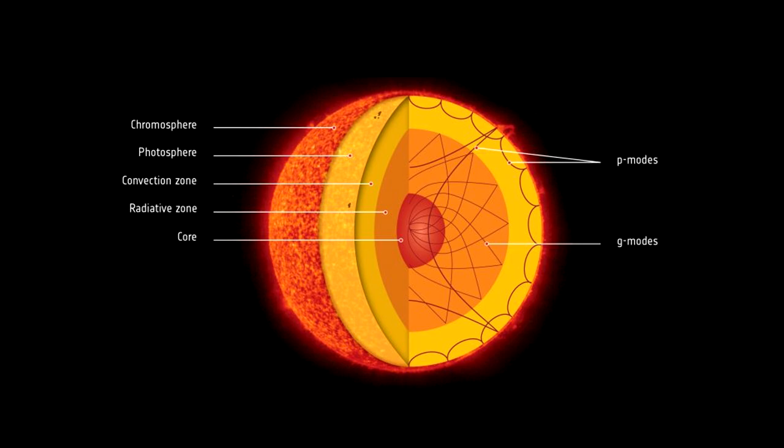The visible surface of the sun is called the photosphere. This is where sunlight is emitted, and it's the layer we see with our eyes.